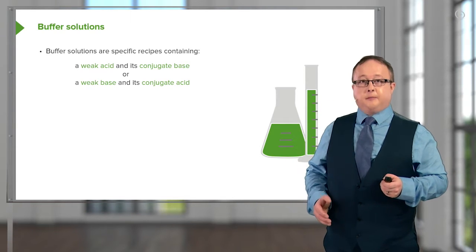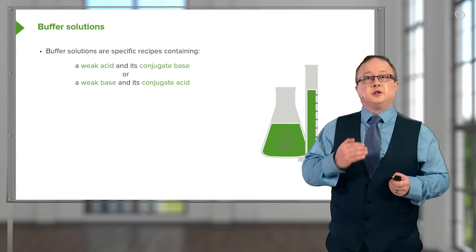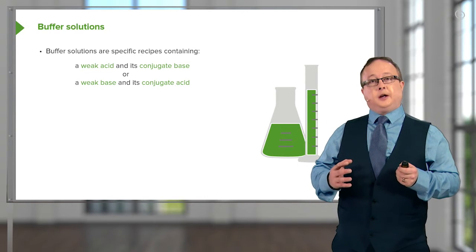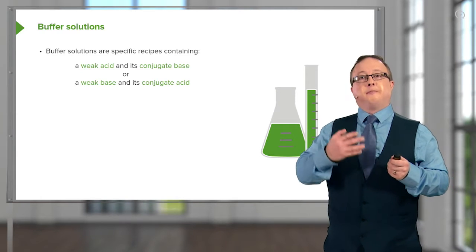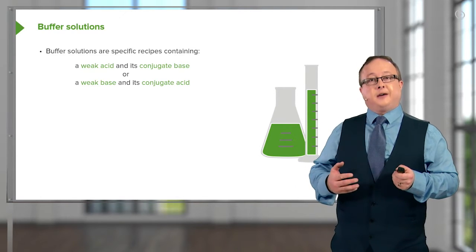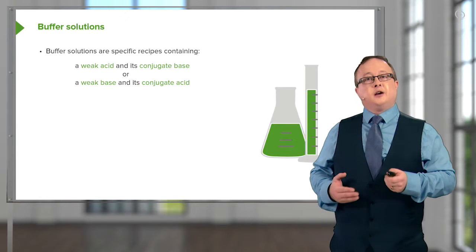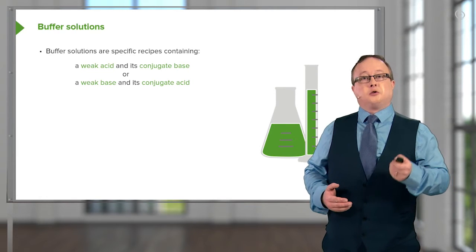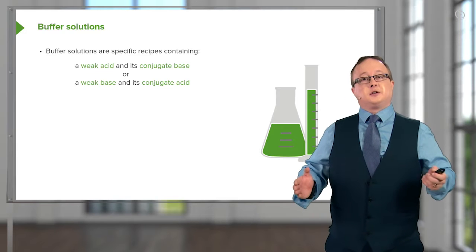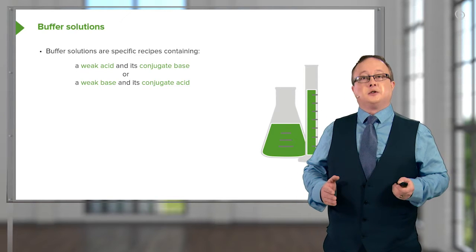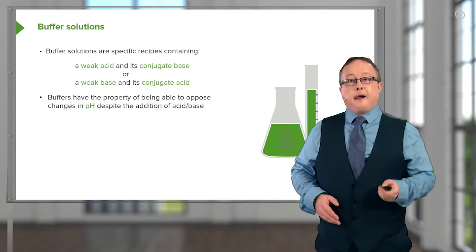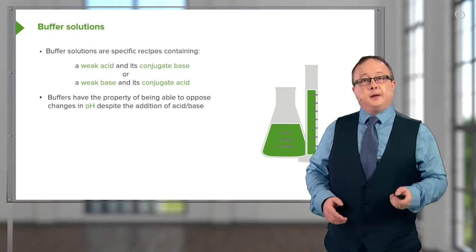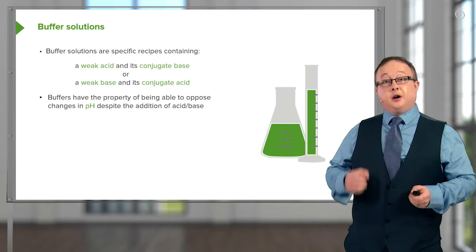This is very important because we are making sure that we can control to some extent what happens when we add subsequent amounts of base and acid. We cannot do this if we deal with a strong acid or strong base, since dissociation occurs in both cases almost completely. Buffers have the property of being able to oppose changes in pH despite the addition of acid or base.